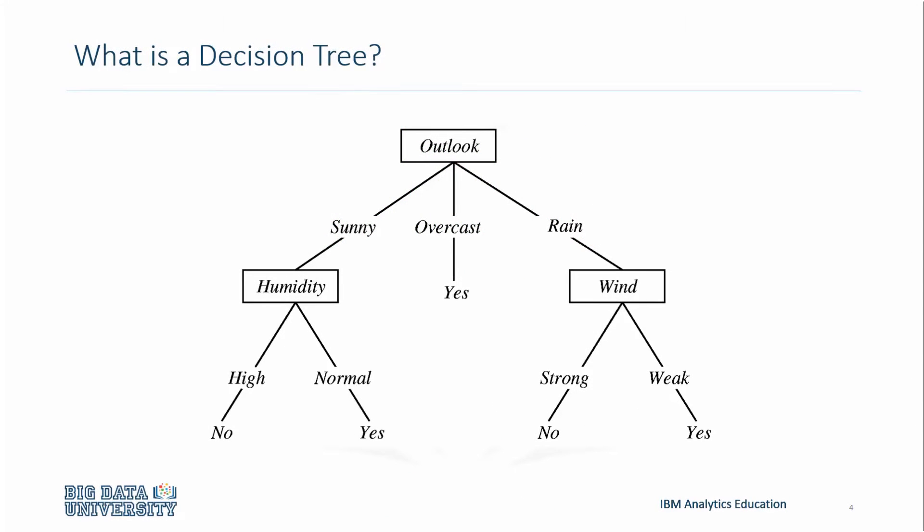Decision trees are built by splitting the training set into distinct nodes, where one node contains all of, or most of, one category of the data. These categories can be called subsets.